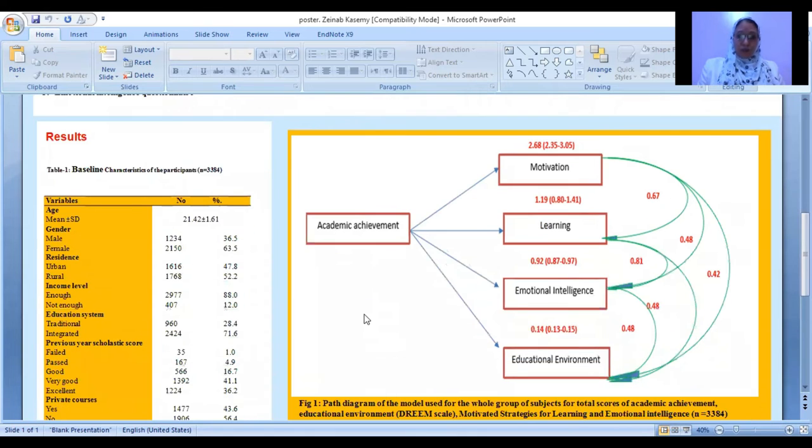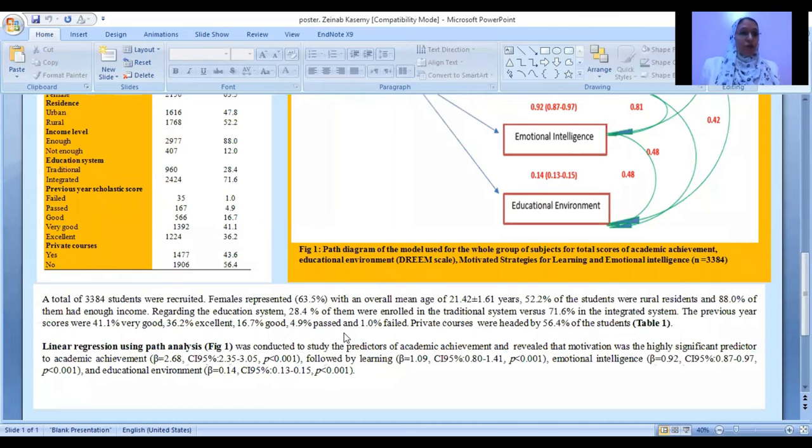Our data are demonstrated in just two forms: one table and one graph. The table shows that a total of 3,384 students were recruited. Females represented 63.5% with an overall mean age of 21.4 years.